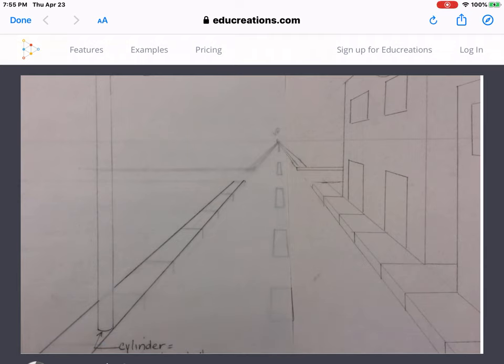Somebody asked earlier today about how to draw a circle in perspective. The circle is really nothing more than dealing with an ellipse or an oval.